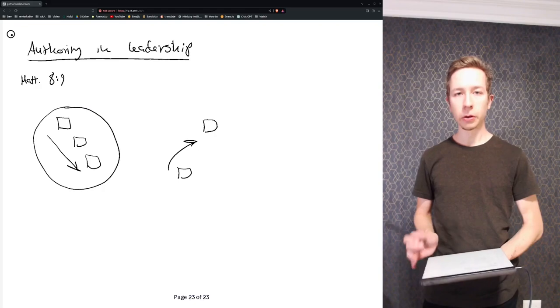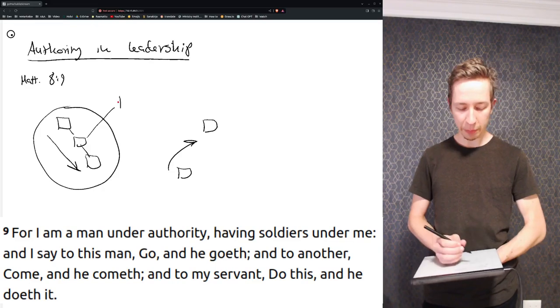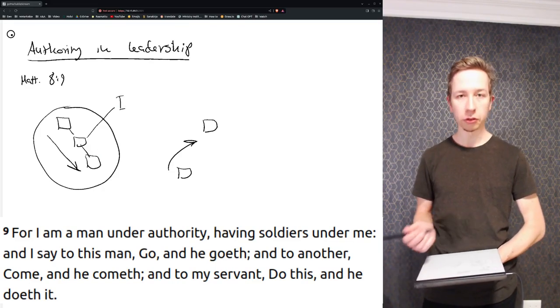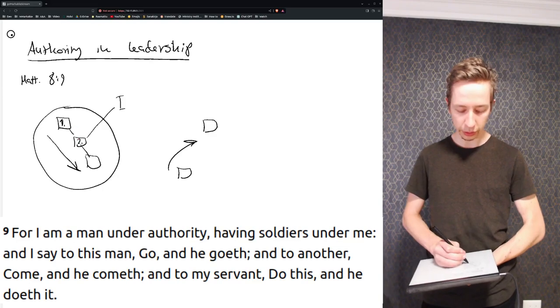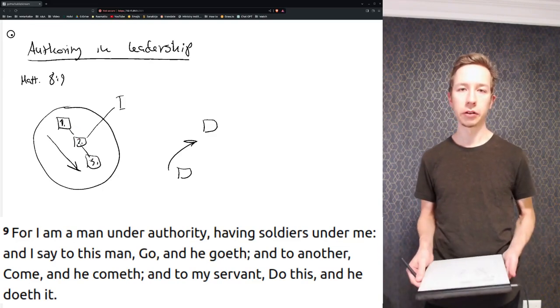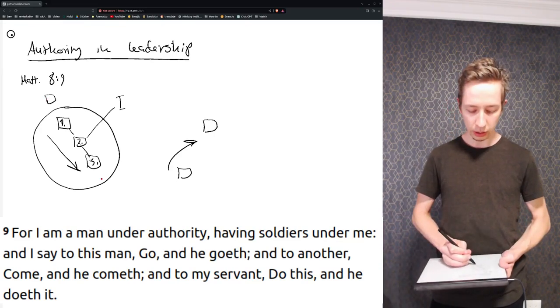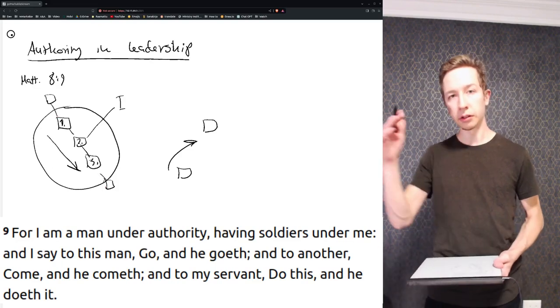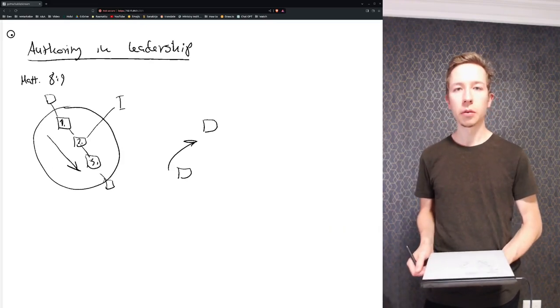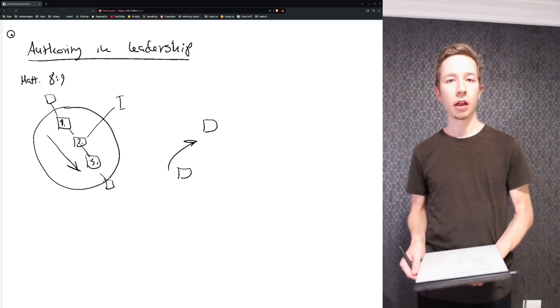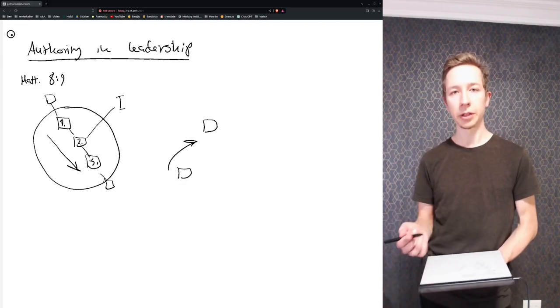So what I wanted to focus on was what it says here: I am a man under authority and have soldiers under me. In this example there's three layers, there's one, two, and three, and the centurion here was the number two layer of authority. Of course this can go on indefinitely, but in this case these three layers were introduced. I think there's a misconception about leadership and authority and really ignorance about authority in this manner.